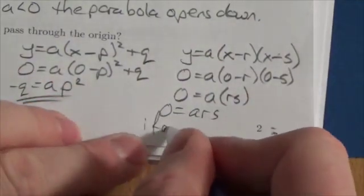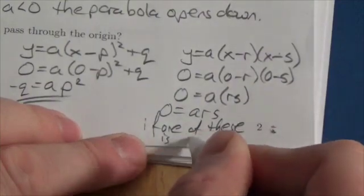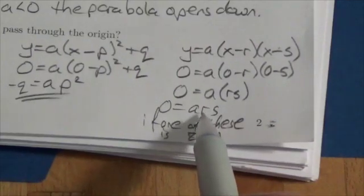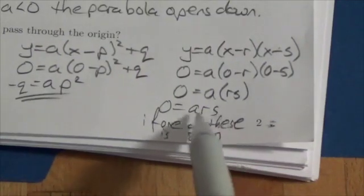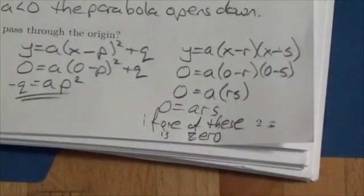Essentially, if one of these is 0 - in other words, if the stretch factor is 0, which would mean there's no parabola anyway, but if either of the X-intercepts here, R or S, either of the roots is 0, then it's going to pass through the origin.